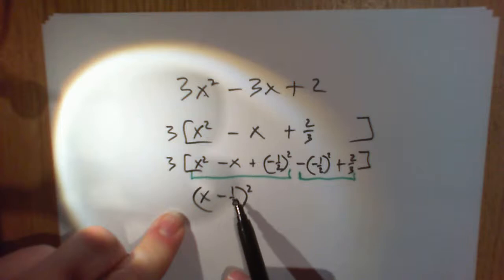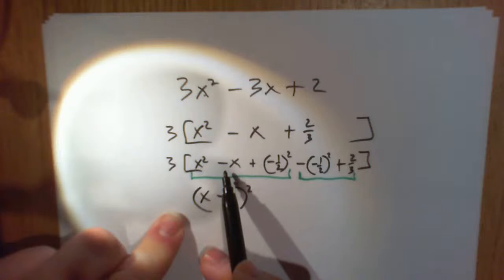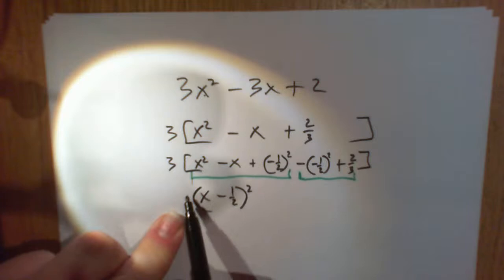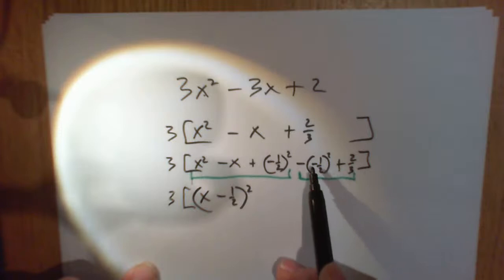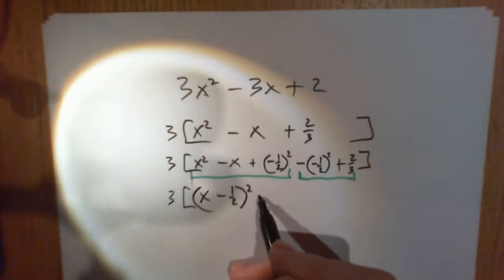That becomes everything that's in green. You can multiply it out to check. Square the left, square the right, minus a half squared is the same as plus a quarter. Multiply them together, x times minus a half is minus a half x, and double it, you get minus x. So this is all that. We still have that. Now we just need our calculator to work out this: minus a half squared is plus a quarter, so that's minus a quarter plus 2/3. That's 5 over 12.